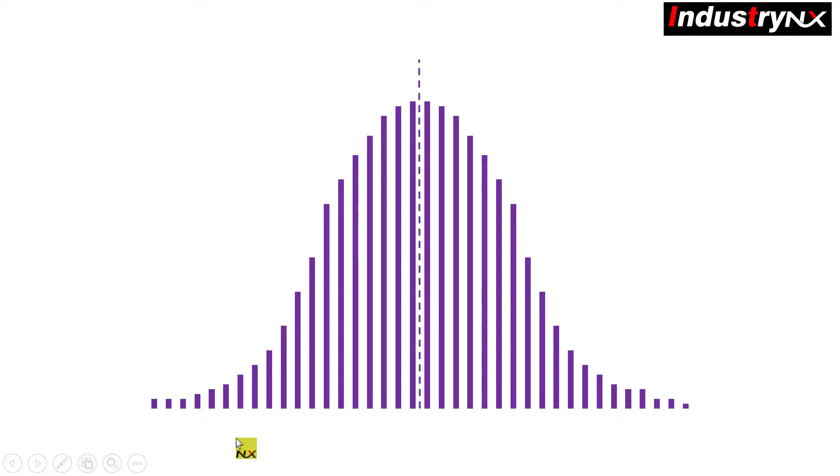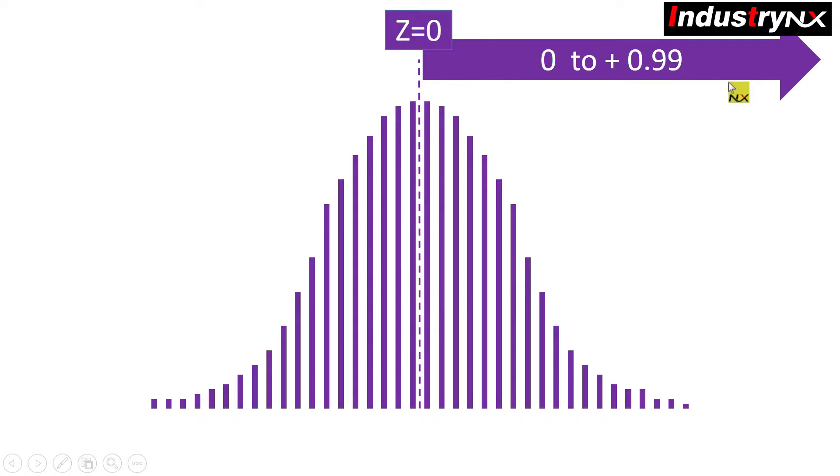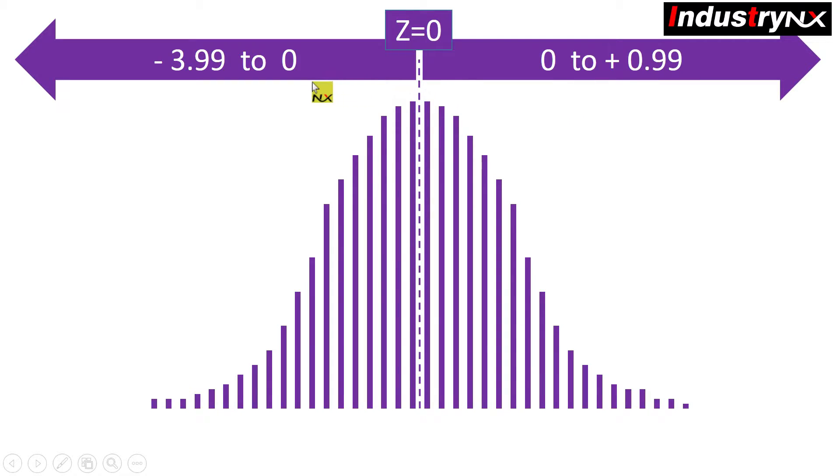If a z-score is 0, it indicates that the data point score is identical to the mean score. You can see here z equals 0 at center and it is always positive value on right hand side of curve and increasing as shown. Similarly, it is always negative value on the left hand side of curve and decreasing as shown.